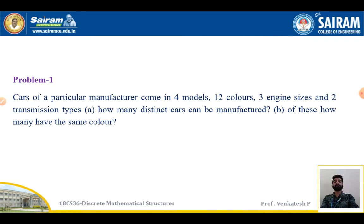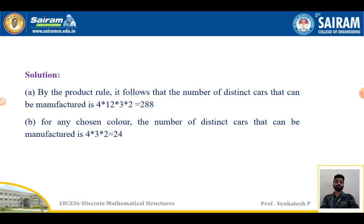Problem 1: Cars of a particular manufacturer come in 4 models, 12 colors, 3 engine sizes, and 2 transmission types. How many distinct cars can be manufactured? And second, out of these, how many have the same color? By the product rule, the number of distinct cars that can be manufactured follows.